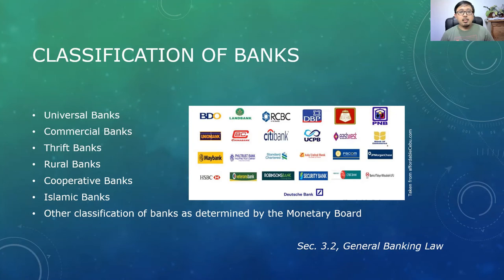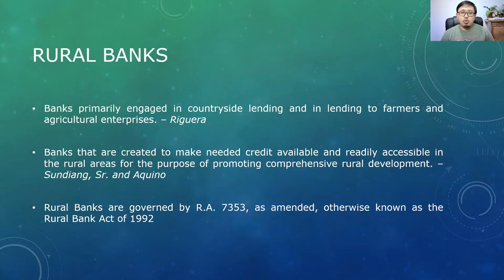According to Section 3.2 of the General Banking Law, the classifications of banks are: universal banks, commercial banks, thrift banks, rural banks, cooperative banks, Islamic banks, and other classifications as determined by the Monetary Board.